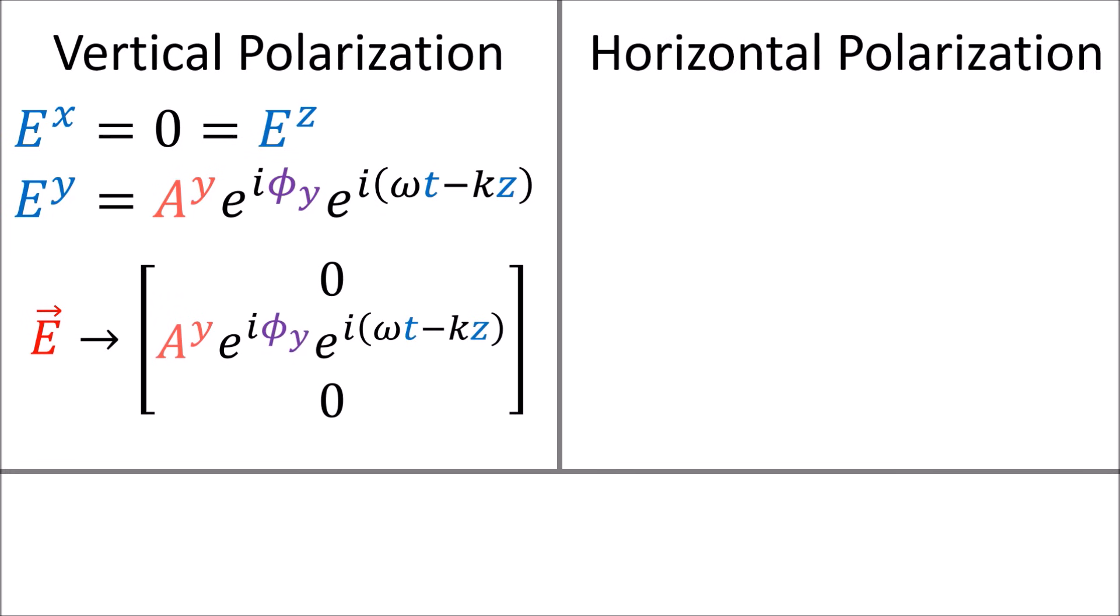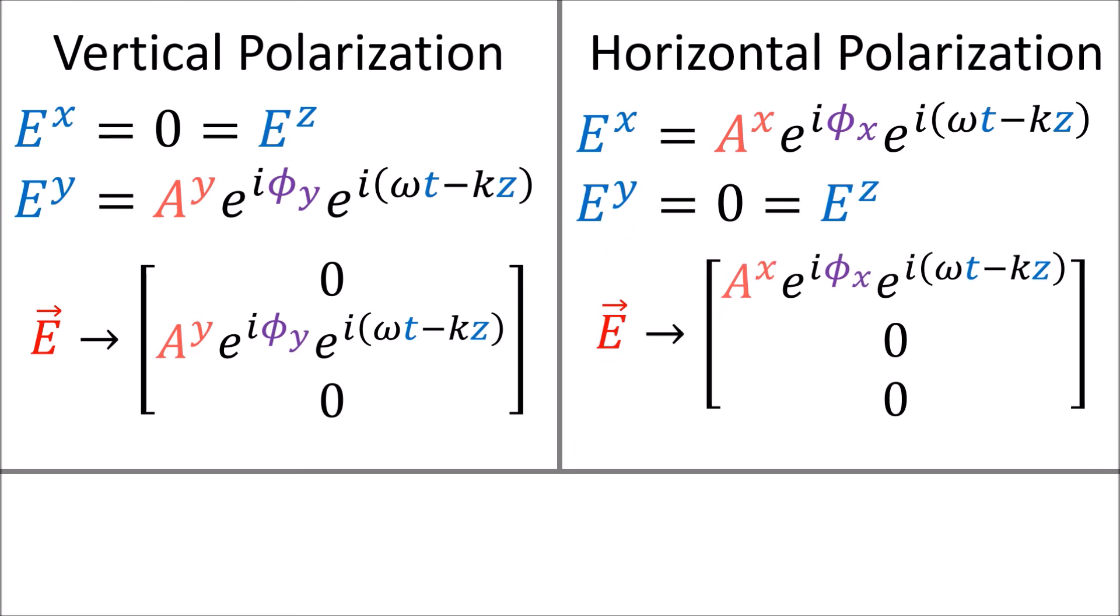To review, with the vertically polarized waves, the y component of the electric field is a traveling wave, and the x and z components are zero. And with a horizontally polarized wave, the x component of the electric field is a traveling wave, and the y and z components are zero.